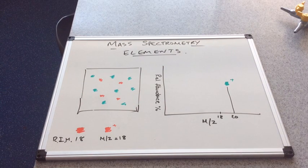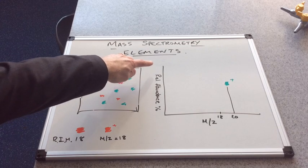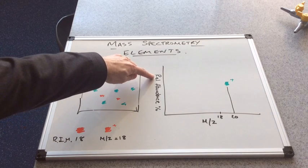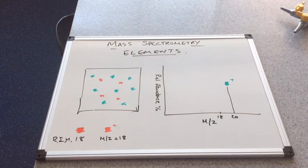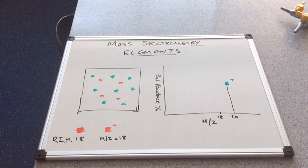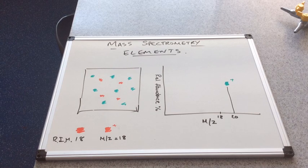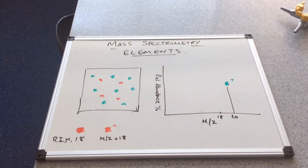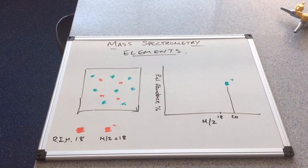I've labeled the y-axis now, and it represents the relative abundance. Sometimes it's expressed as a percentage, other times as a raw number. Have a think about how that would be translated into the spectrum.